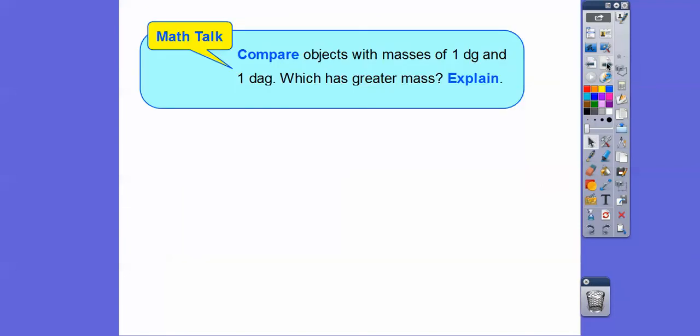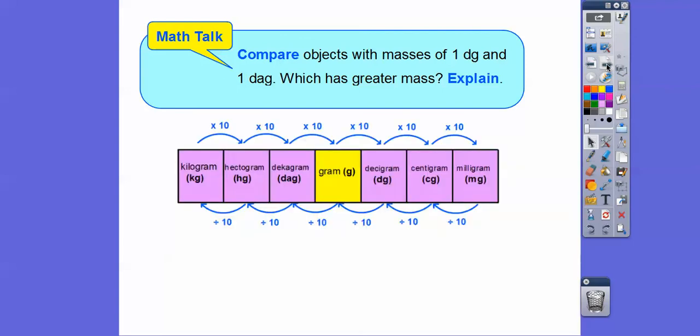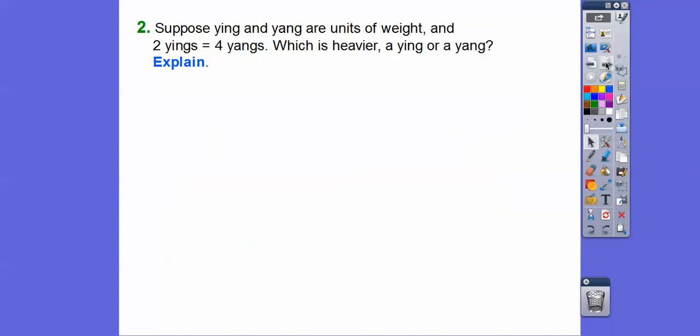Let's answer a couple of questions here. Compare objects with mass of one decigram with one decagram, which has greater mass, and explain. Here's decagram right here. Since it's to the left of decigram, it's going to be greater than. 1 decagram equals 100 decigrams, so 1 decagram is greater than 1 decigram.